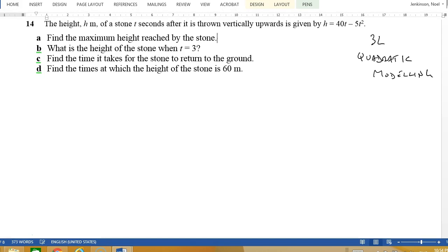The height h of a stone t seconds after it's thrown vertically upwards is given by h equals 40t minus 5t squared. So we have a graph here of height against time.